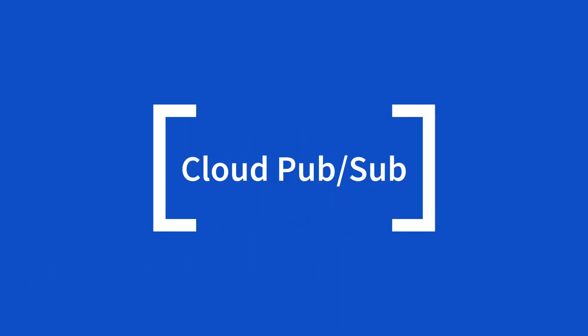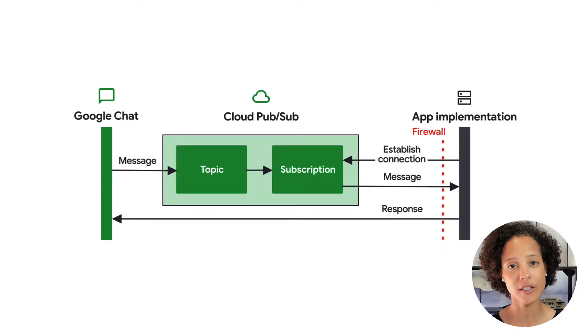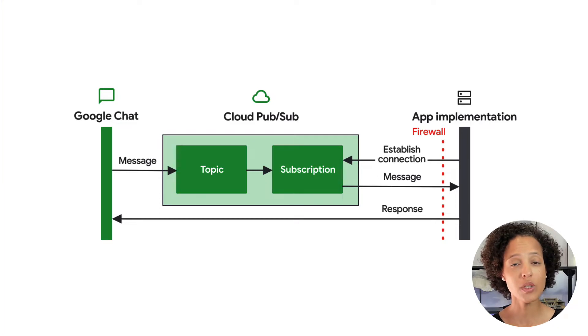If the chat app implementation resides behind the firewall, Google Chat may be unable to make HTTP requests to it. One way to deal with this is to use Google Cloud Pub/Sub. The chat app logic subscribes to a topic that carries messages from Google Chat. With this architecture, the chat app still must use HTTP to send messages to Google Chat.